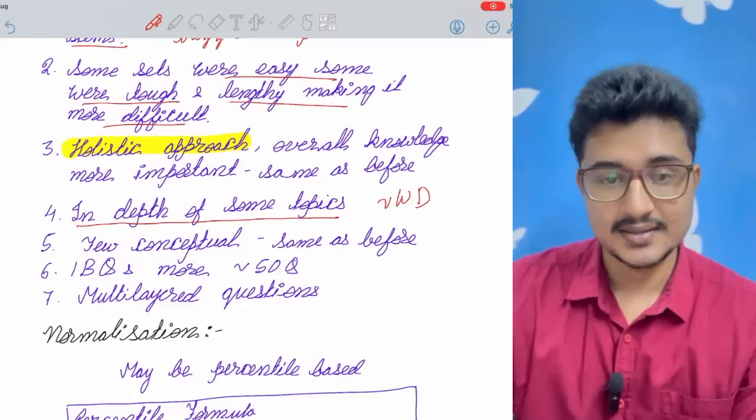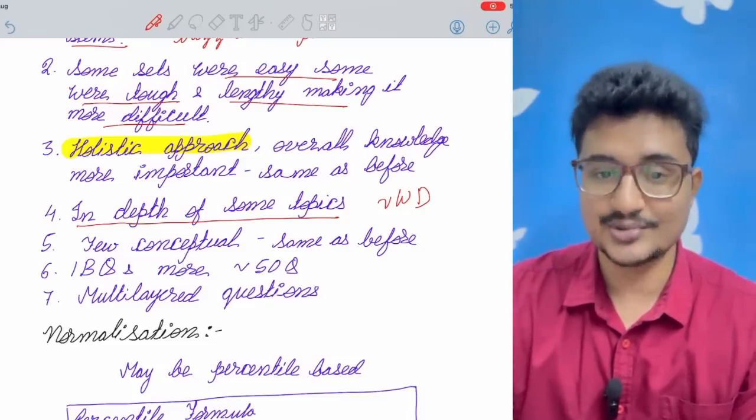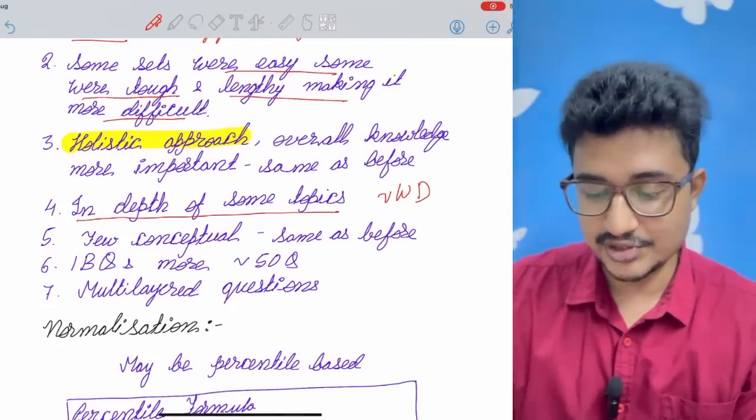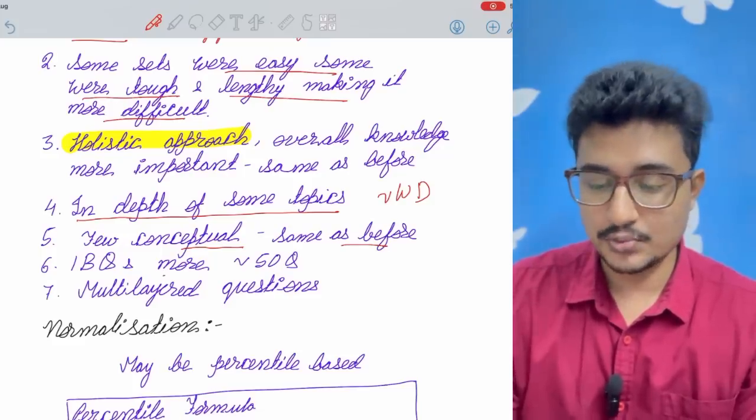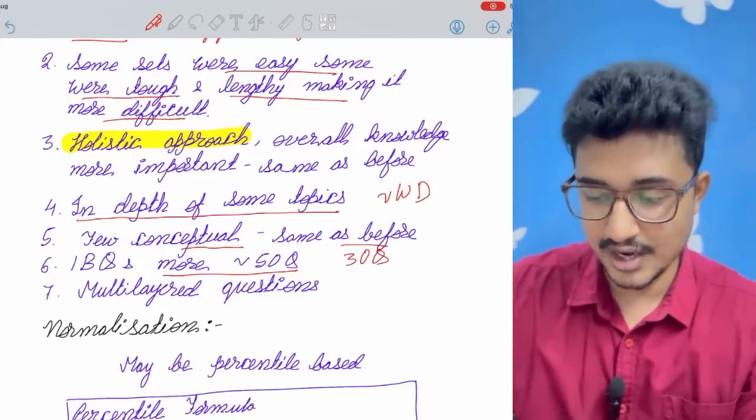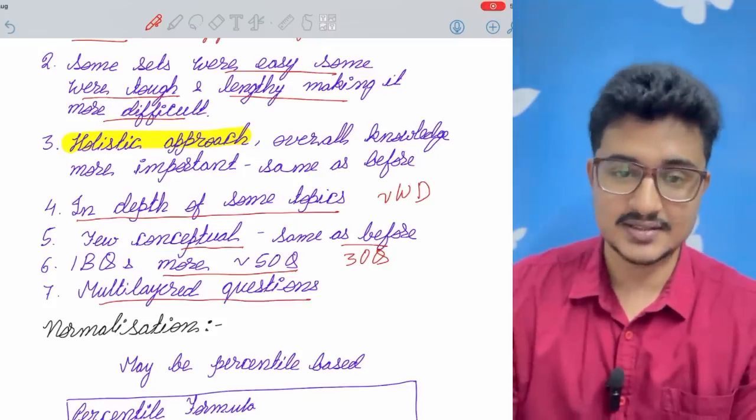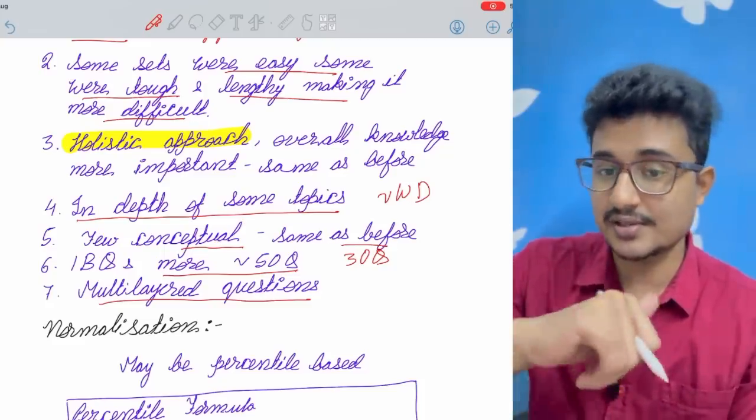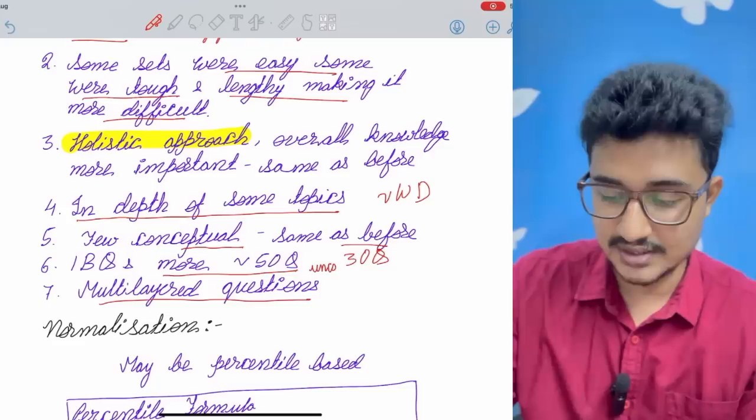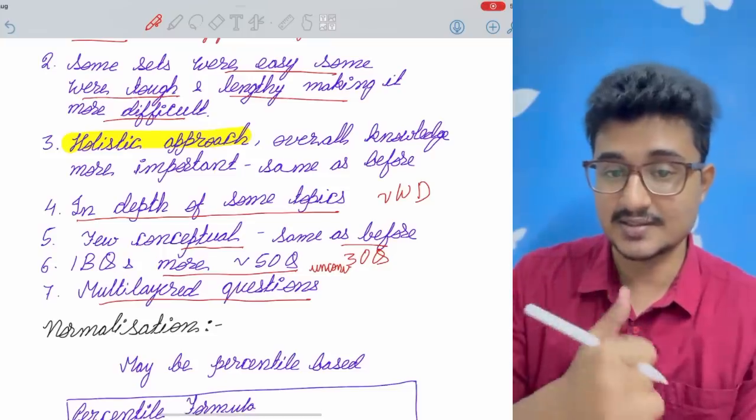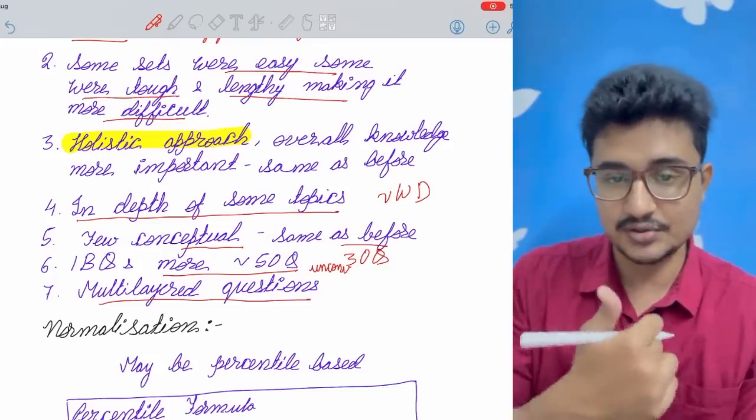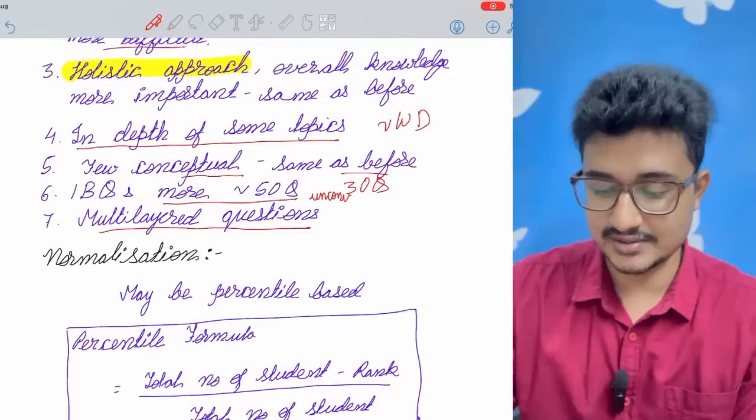One example - Buerger's disease, the types were asked. I never studied them in main notes. It has gone into some depth. Fewer conceptual questions and this is same as before. IBQs were more this time, it was about 50 questions in every shift but in my time it was about 30 questions so IBQs have increased. Multi-layered questions have increased - there are multiple layers, if you crack the diagnosis you have to go what is the next investigation and all. IBQs were more unconventional I would say, many unconventional images were given, not the conventional images that the coaching institutes like DAMS revise.